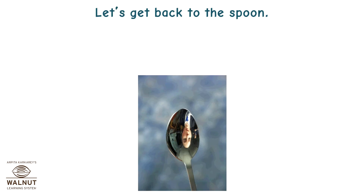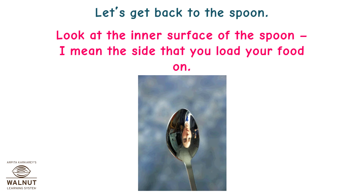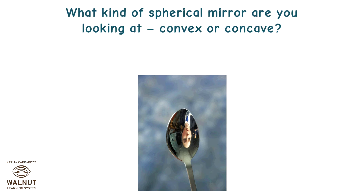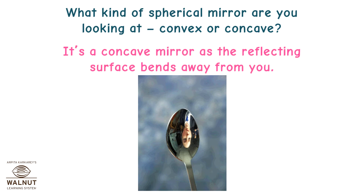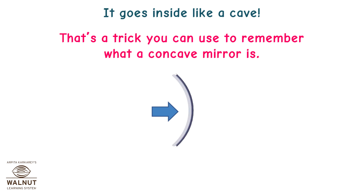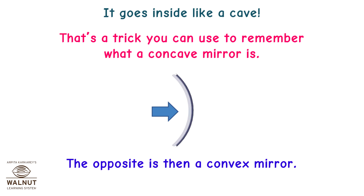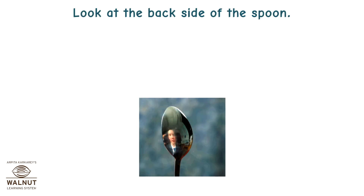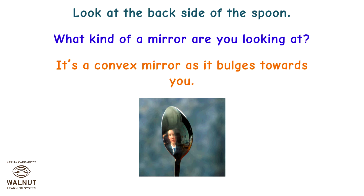Let's get back to the spoon. Look at the inner surface of the spoon — I mean the side that you load your food on. What kind of spherical mirror are you looking at, convex or concave? It's a concave mirror, as the reflecting surface bends away from you. It goes inside like a cave — that's a trick you can use to remember what a concave mirror is. The opposite is then a convex mirror. Look at the back side of the spoon. It's a convex mirror as it bulges towards you.